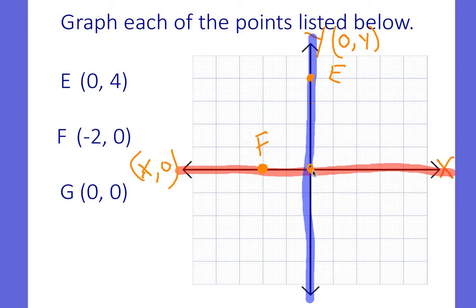And then 0, 0, of course, is my origin. I'm going to call that G. So this is called the origin.